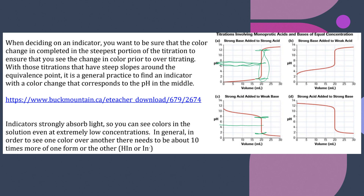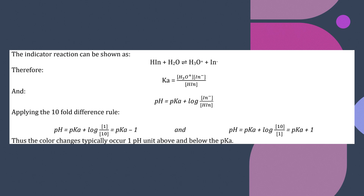Indicators strongly absorb light so you can see the colors in solution even at low concentrations. In order to see one color over another, there needs to be 10 times more of the form — either the protonated form or the deprotonated form. Your indicator reaction can be shown as: the protonated form plus water produces hydronium ion and the deprotonated form, because the proton goes to the water. Therefore, Ka equals the hydronium ion times the deprotonated form over the protonated form — you can see this aligns with the Henderson-Hasselbalch equation.